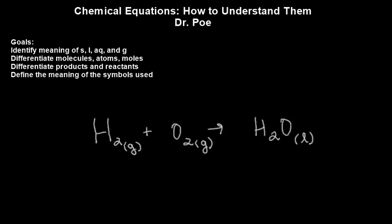Today we're going to cover chemical equations and how to understand them. The goals are: what are the meanings of these little letters S, L, AQ, and G? We're going to differentiate molecules, atoms, and moles. We're going to differentiate the products from the reactants and define the meaning of the symbols used in this chemical equation.